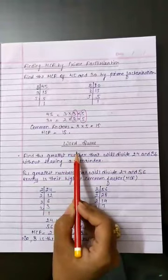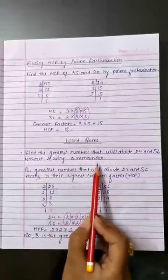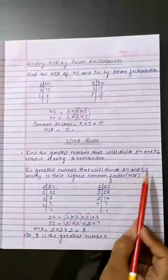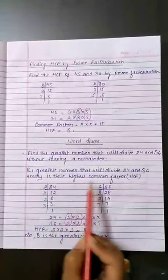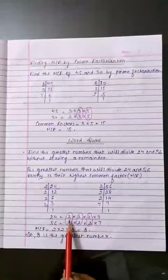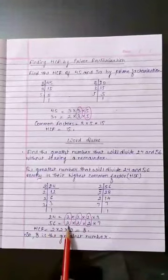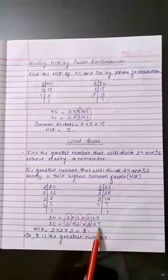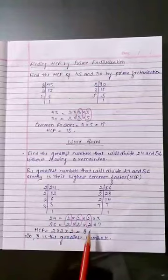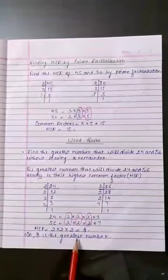Word sums. Find the greatest number that will divide 24 and 56 without leaving a remainder. The greatest number that will divide 24 and 56 exactly is their HCF. The factors of 24 are 2 x 2 x 2 x 3. The factors of 56 are 2 x 2 x 2 x 7. The common factors are 2 x 2 x 2. Therefore the HCF is 8. So 8 is the greatest number.